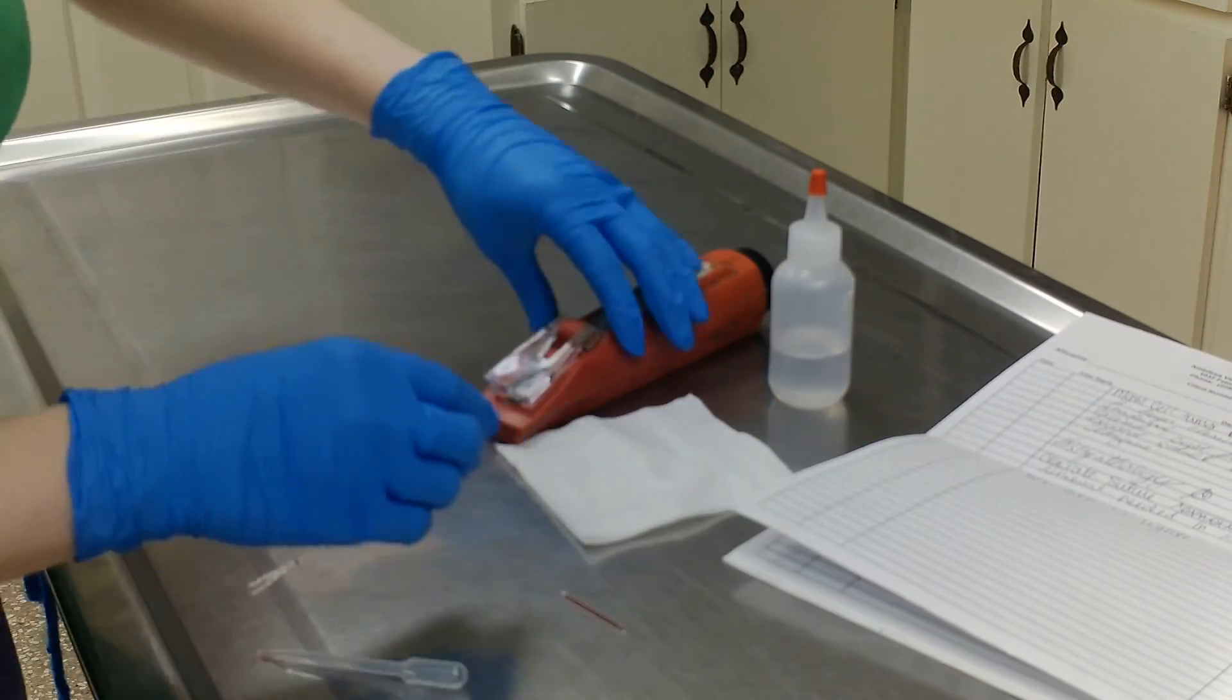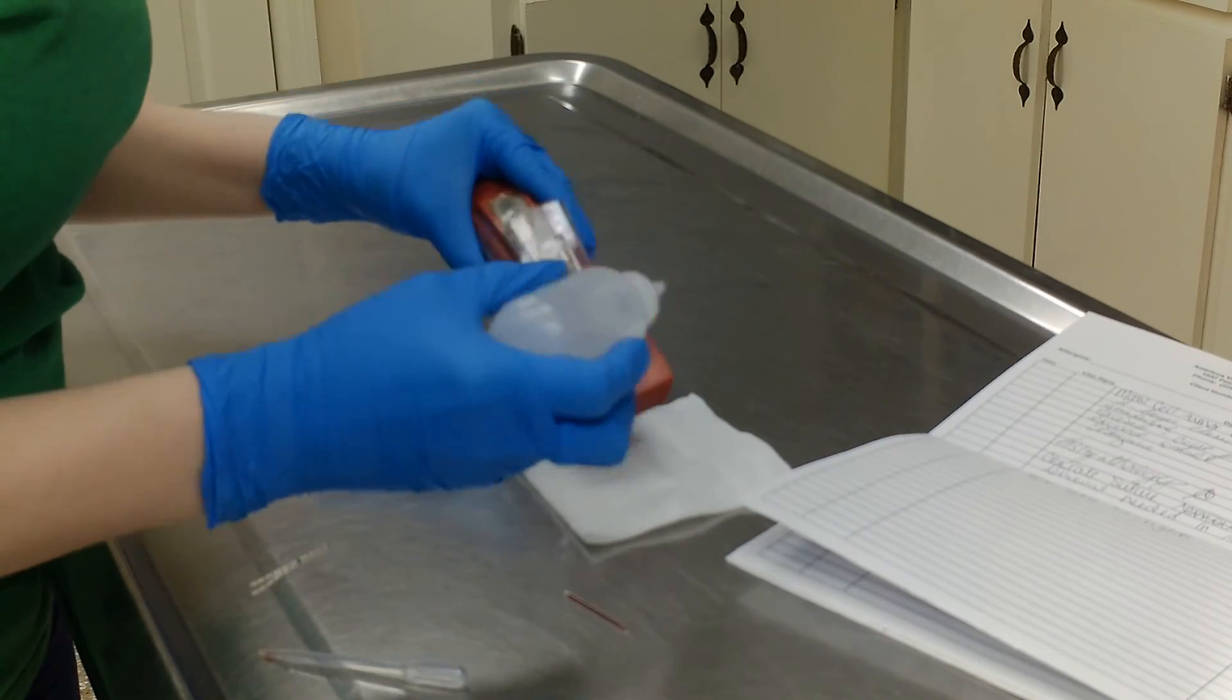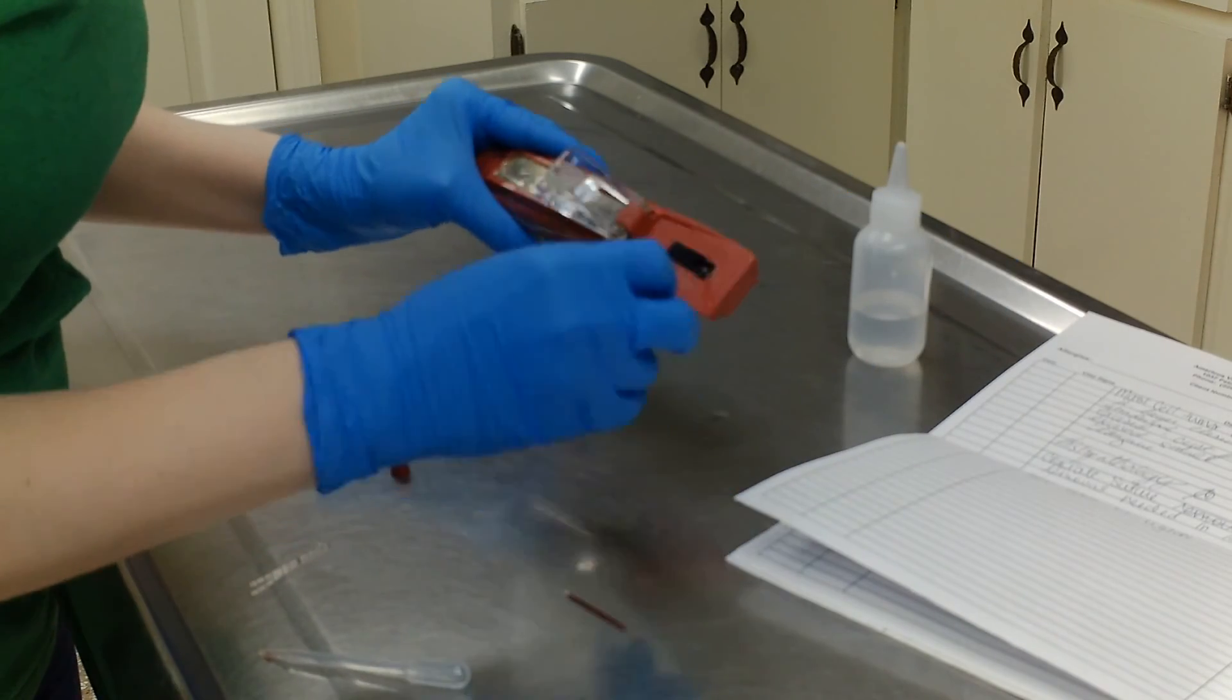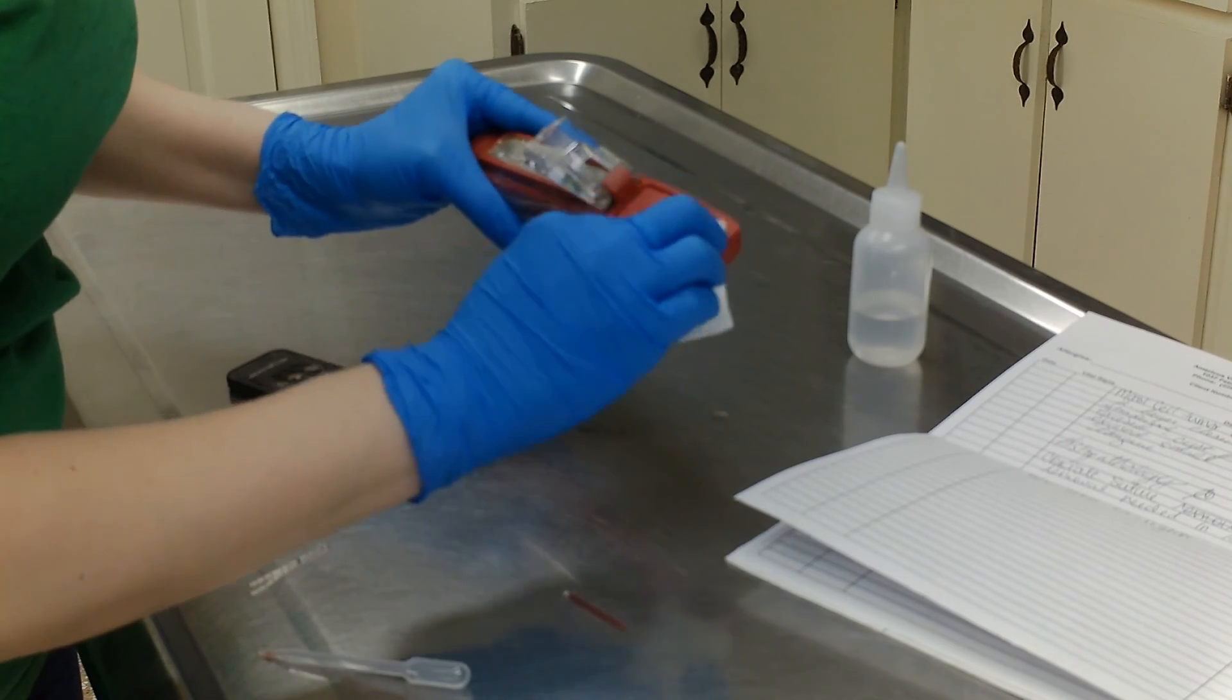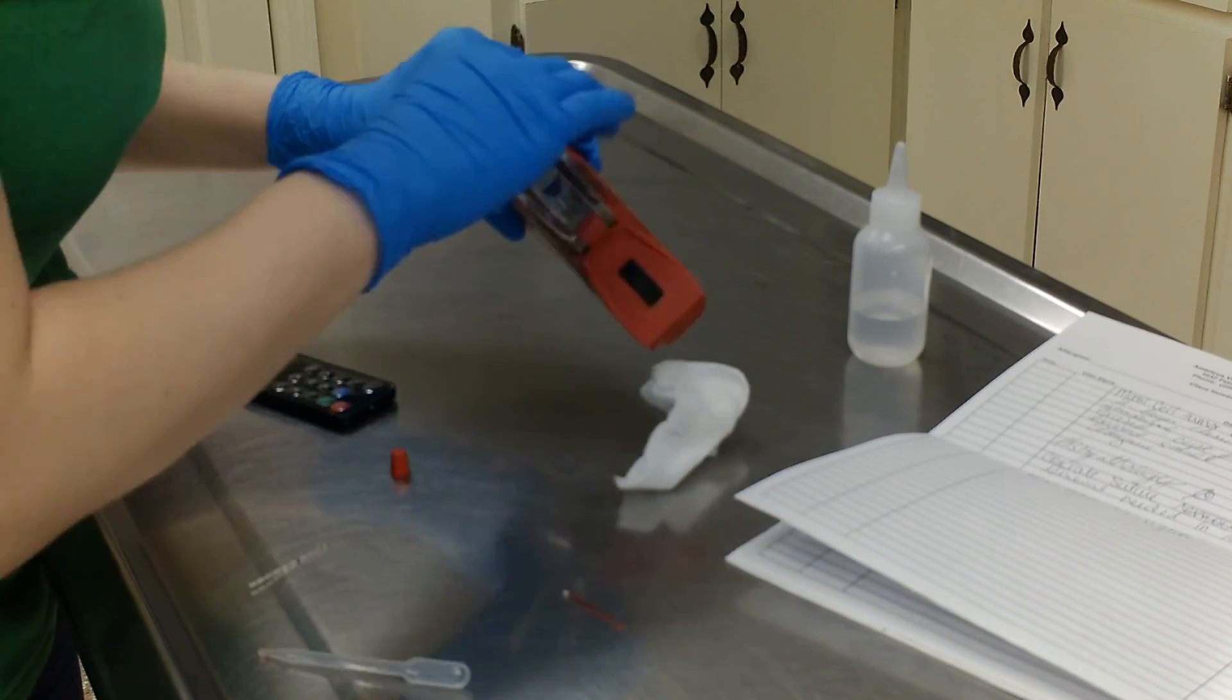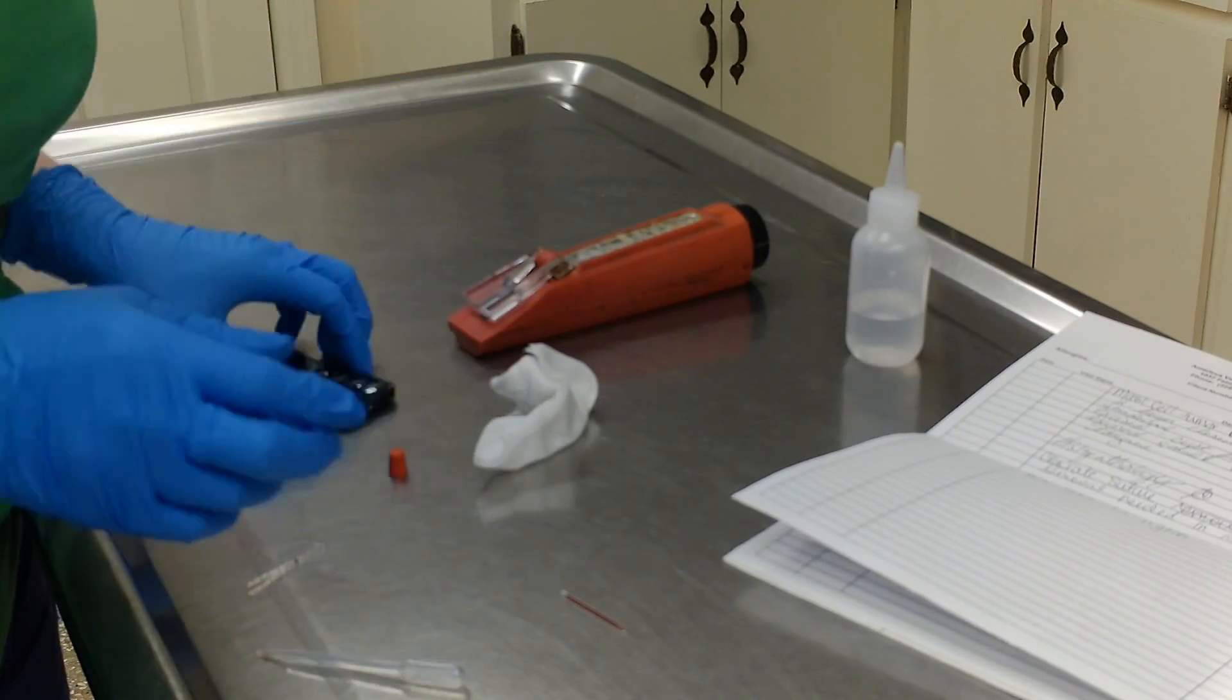Now we're going to clean it off with a little bit of distilled water. Then we're going to wipe it off, and we're going to put everything back where it goes. And that's how you do a PCV and total solids and total proteins. Then we put it into the patient's chart.